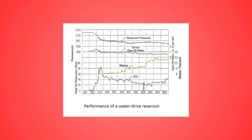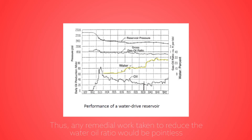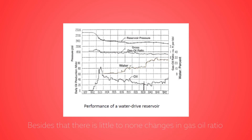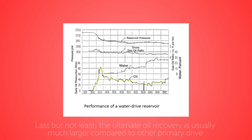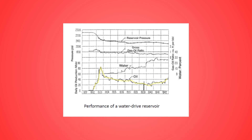In terms of water production, early excess water production can be seen in structurally low wells. Thus, any remedial work taken to reduce the water oil ratio won't be pointless. Besides that, there is little to no change in gas oil ratio, especially if the reservoir does not have an initial free gas. Last but not least, the ultimate oil recovery is usually much larger compared to other primary drives, and can reach from 15% up to 60%.